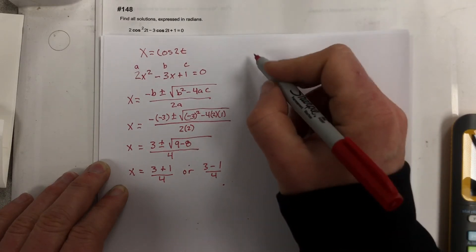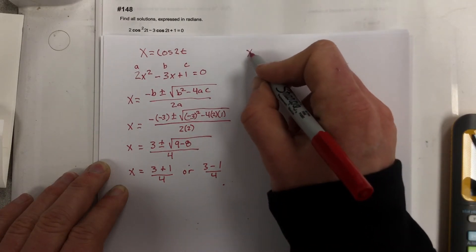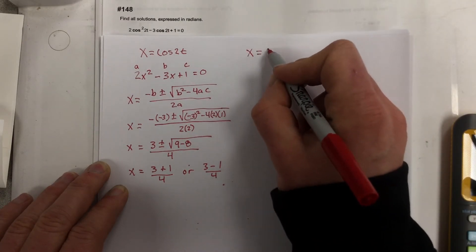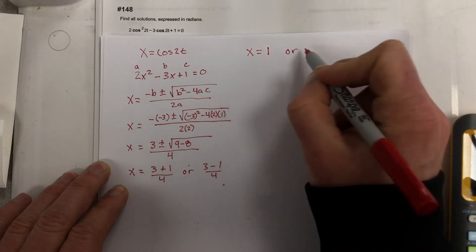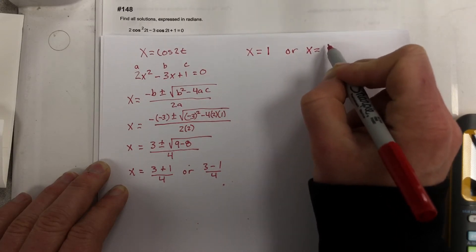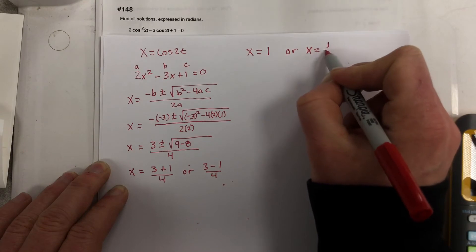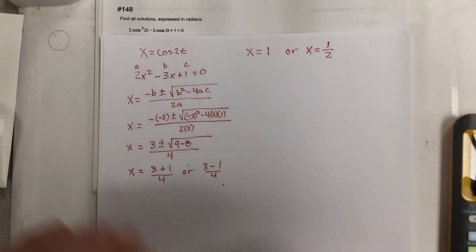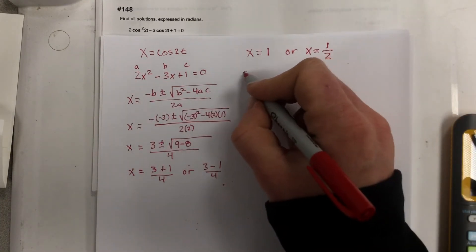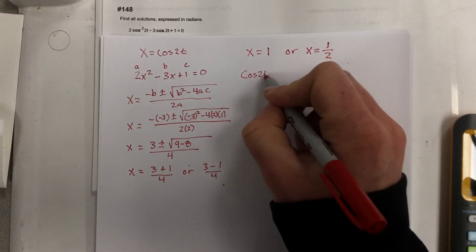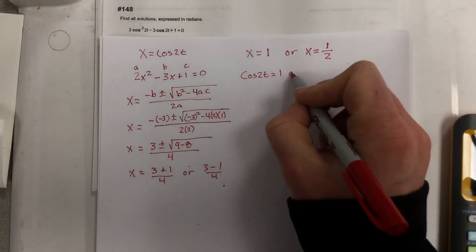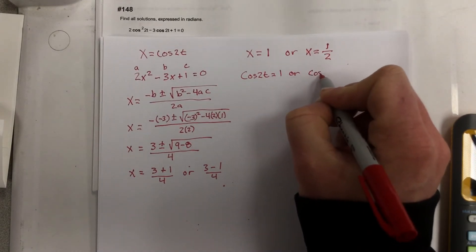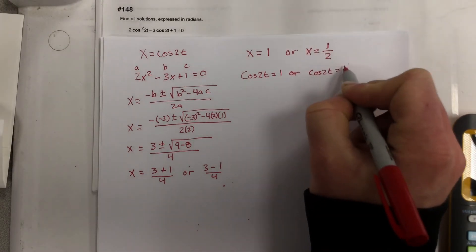So if I write that up here, this is x equals 1, or x equals 2 over 4, which is 1 half. Let's substitute x back in, and then I get cosine 2t equal 1, or cosine 2t equal 1 half.